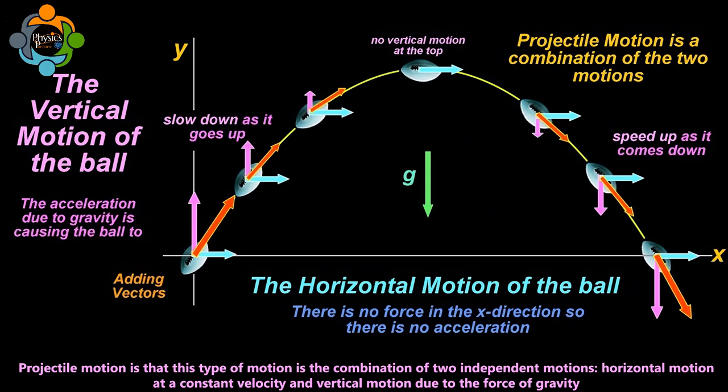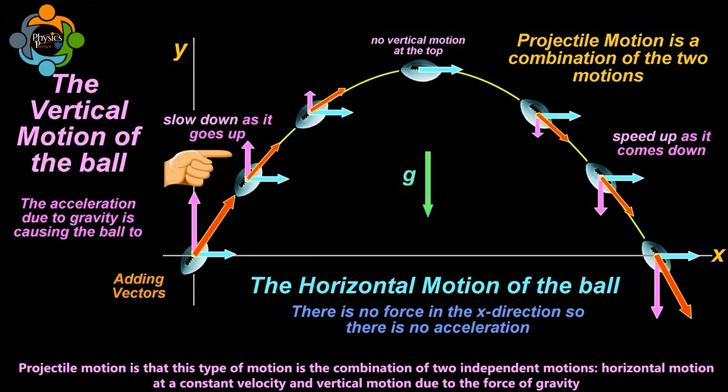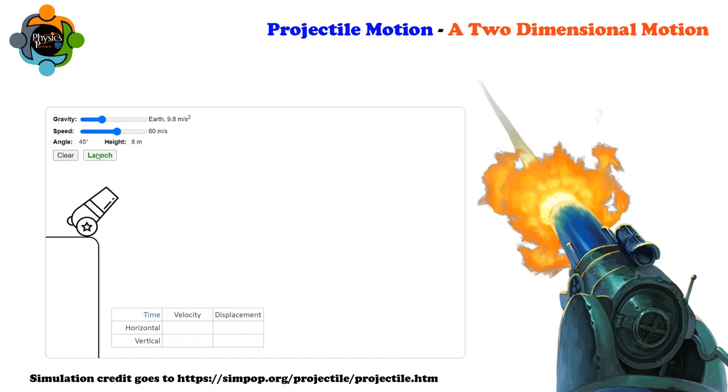The path followed by a projectile is known as a trajectory. The interesting part of projectile motion is that it is the combination of two independent motions: horizontal motion at a constant velocity, and vertical motion due to the force of gravity.